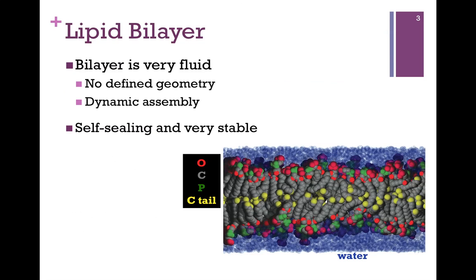Another important thing to keep in mind is that this bilayer is not rigid. It's very fluid, so these lipid molecules move quite freely within this environment. There's no defined geometry, even though we often picture it as a rectangle. There's quite a lot of variability in the dimensions as these lipids move. Although the lipid molecules within the membrane are very fluid, it's still a self-sealing and stable environment, and this is important.